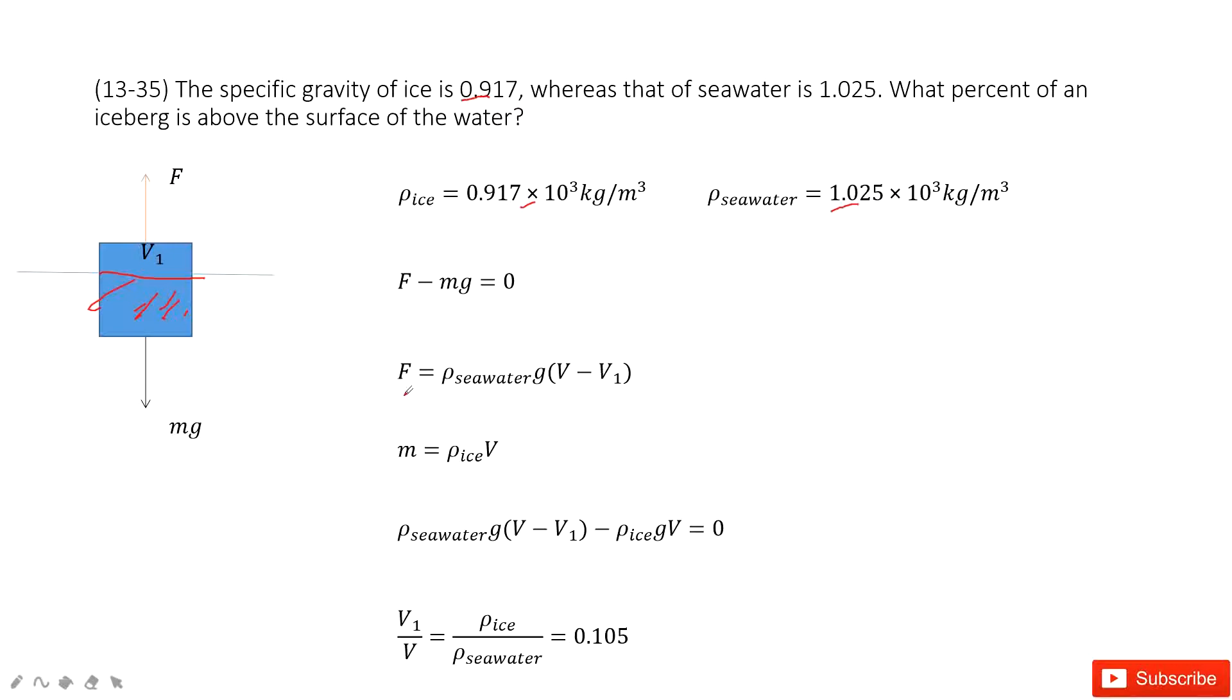Buoyancy is equal to gravity of water replaced by this object, by this submerged volume. So now we can see density of the water times g times the submerged volume v minus v1.